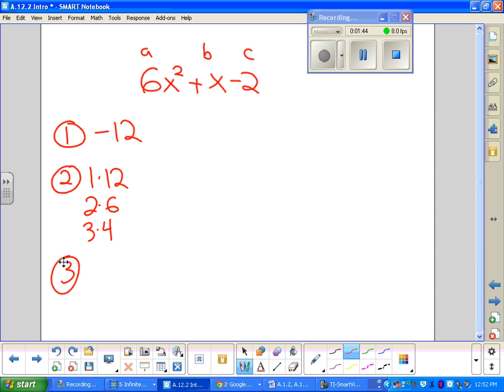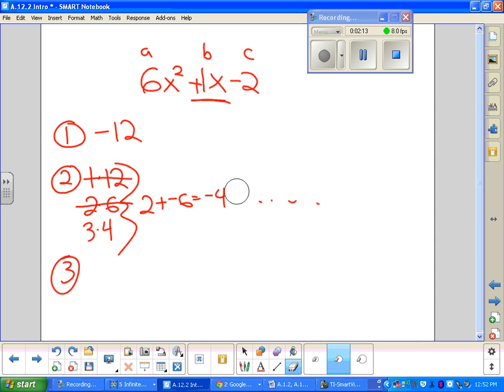One of these three sets of factors will add up to positive 1, or get to positive 1. I cannot do anything with 1 and 12 to get to 1. I'll either get an 11 or a 13. I can't do anything with a 2 and a 6, because that will give me, if I do 2 plus negative 6, I'll get negative 4. If I do negative 2 plus negative 6, I'll get negative 8. So I'll never get to 1, even if I subtract them.